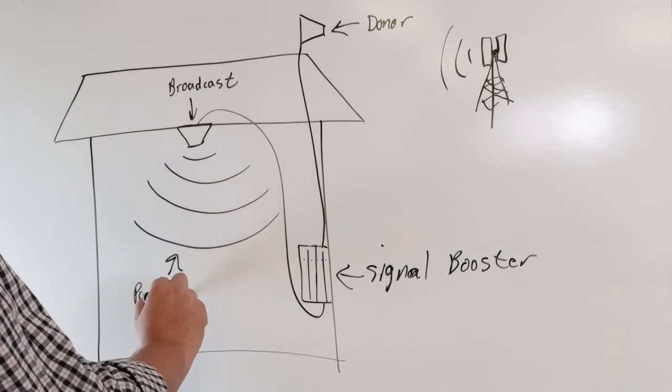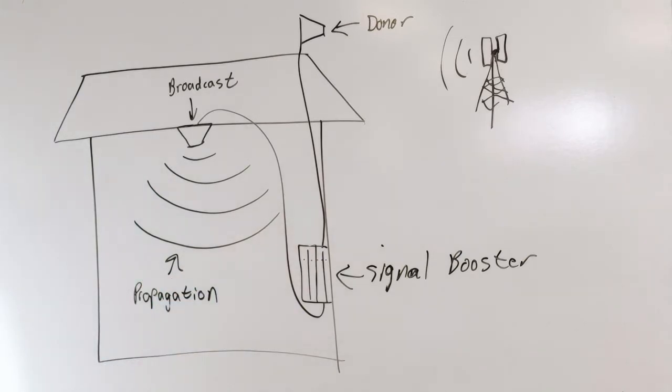The area that these two types of antennas cover, or the amount of signal that these antennas radiate, is called their propagation.